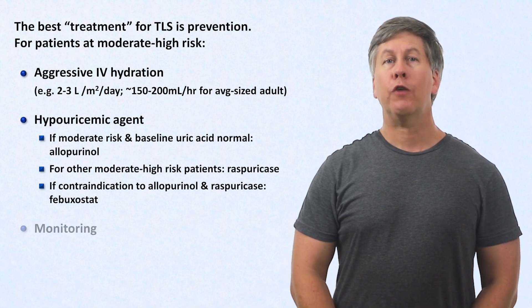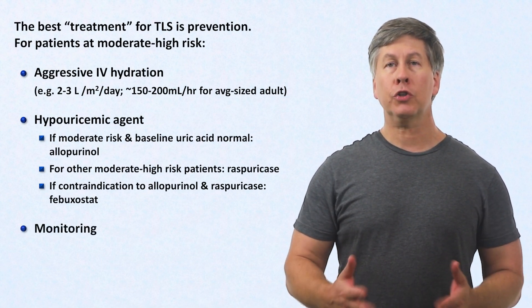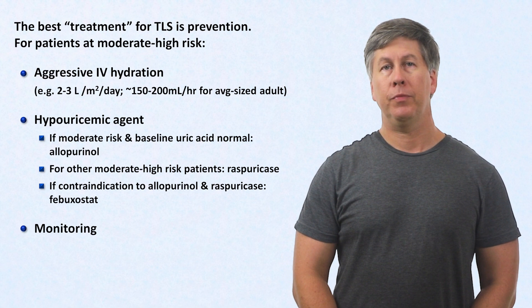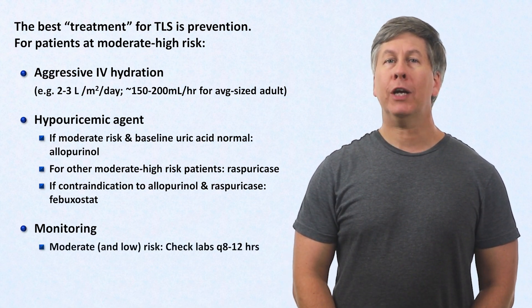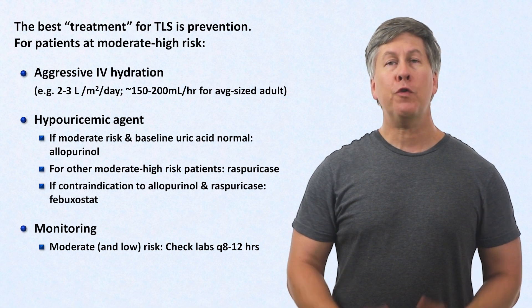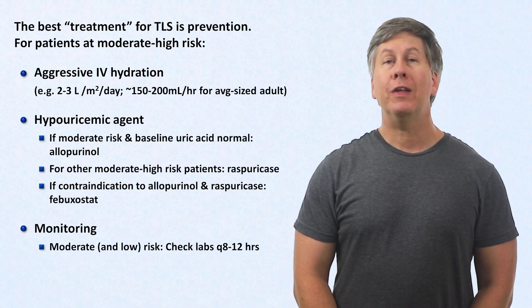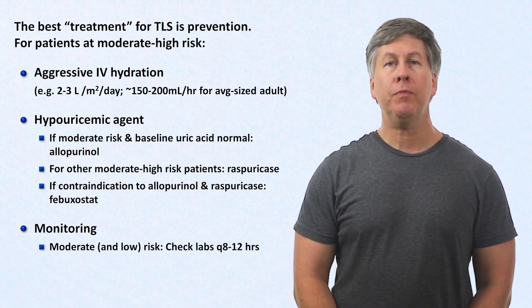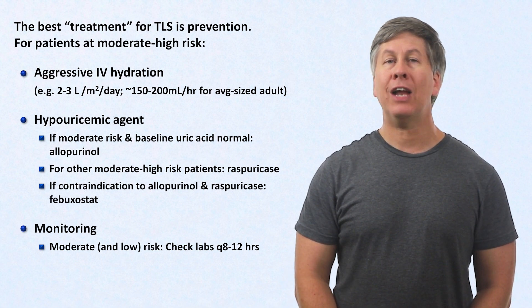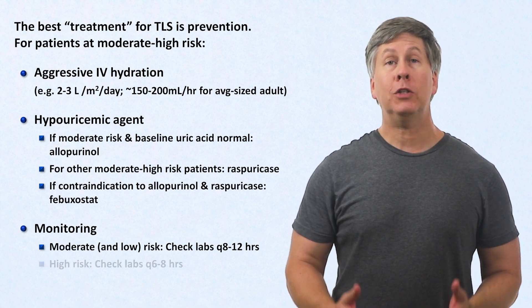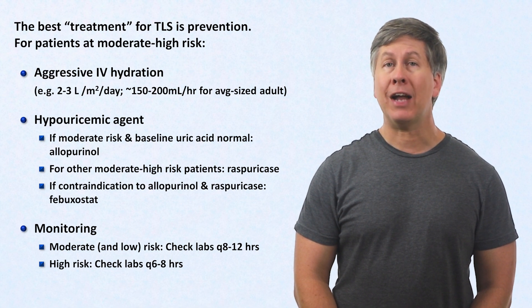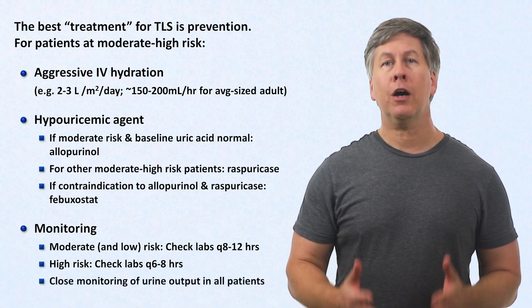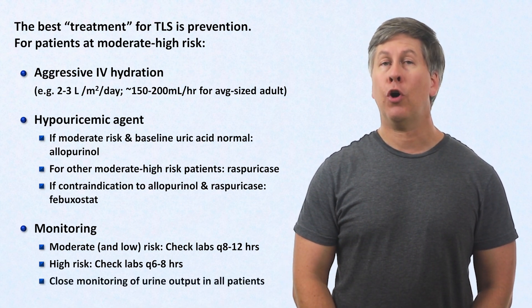Returning to our list of preventive strategies, frequent lab monitoring is also critical. For patients at moderate and low risk, labs should be checked every 8 to 12 hours for the first week of treatment. This includes a basic metabolic panel, calcium, phosphate, and uric acid. For patients at high risk, labs should be checked every 6 to 8 hours, and close monitoring of urine output is indicated in all patients.